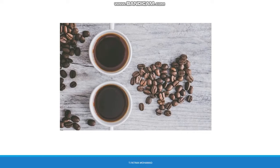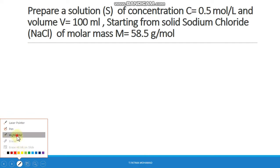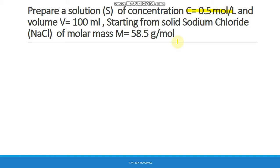This means to prepare a solution of an exact concentration, we should follow a standard procedure. Let's start with an example. Prepare a solution S of concentration C = 0.5 mol/L and volume V = 100 mL, starting from solid sodium chloride NaCl of molar mass 58.5 g/mol. Let's highlight what is given: we have the concentration, the volume, and the molar mass.